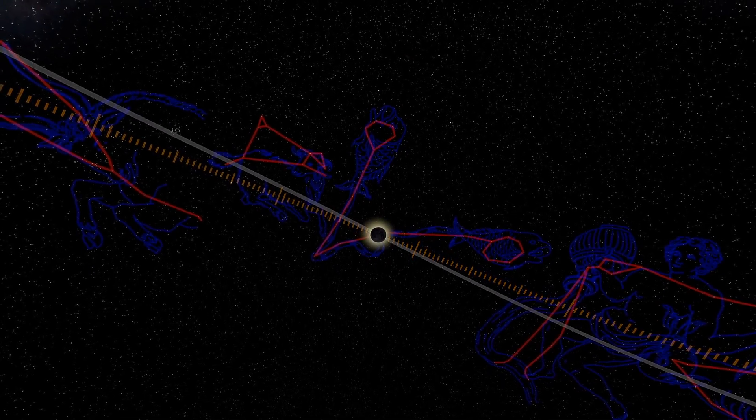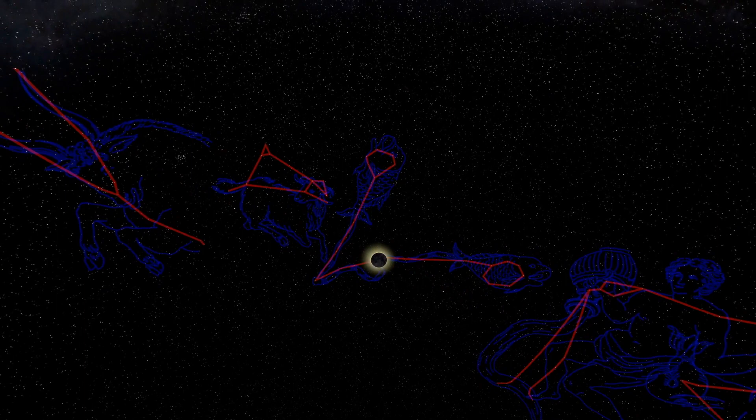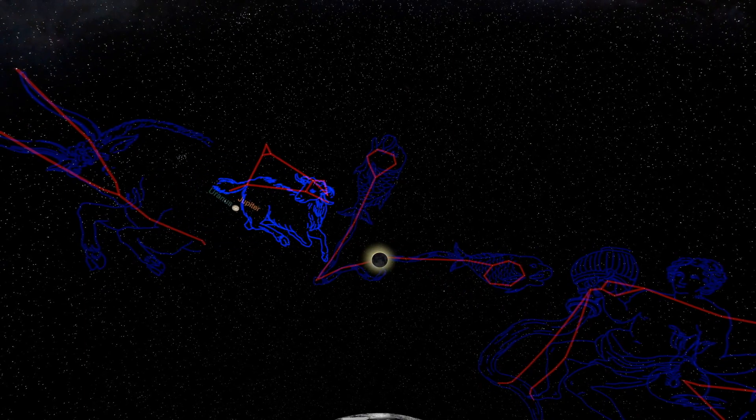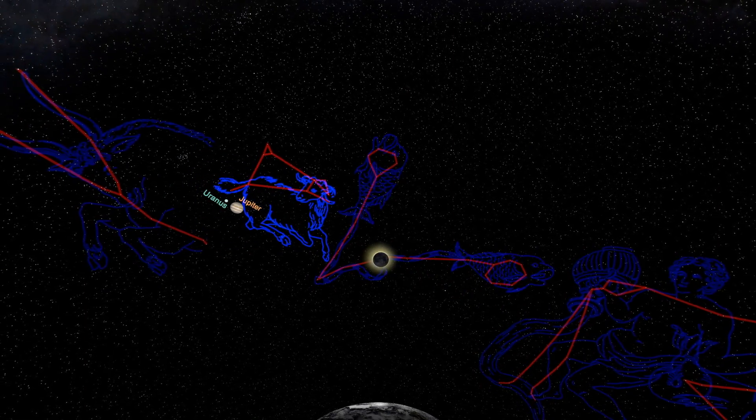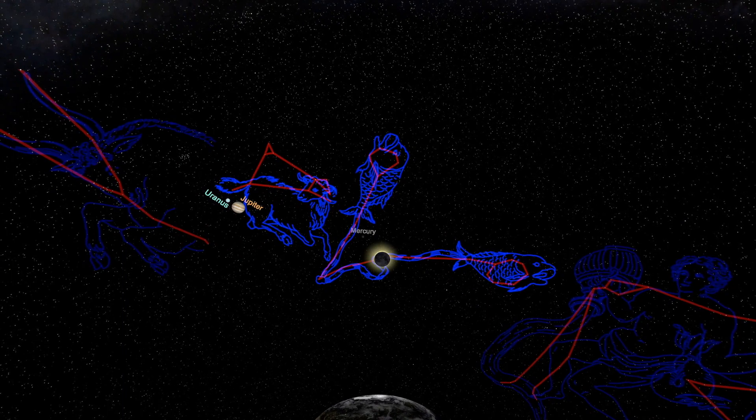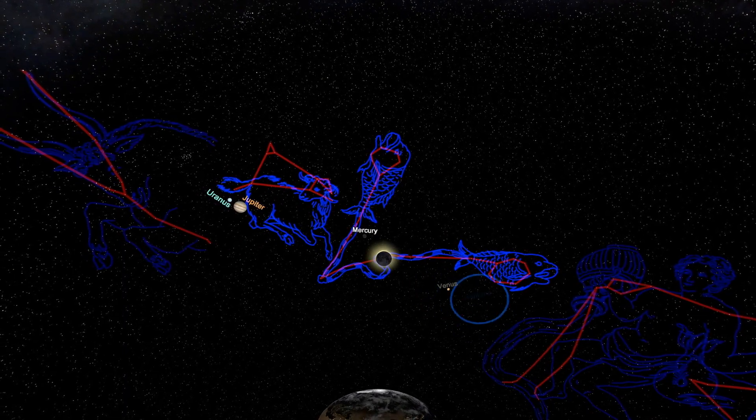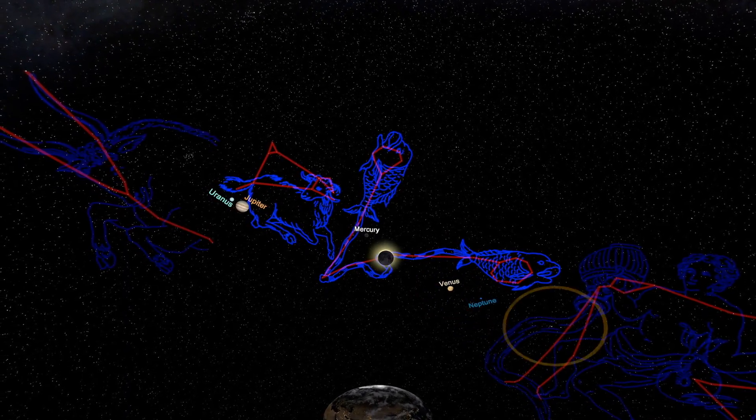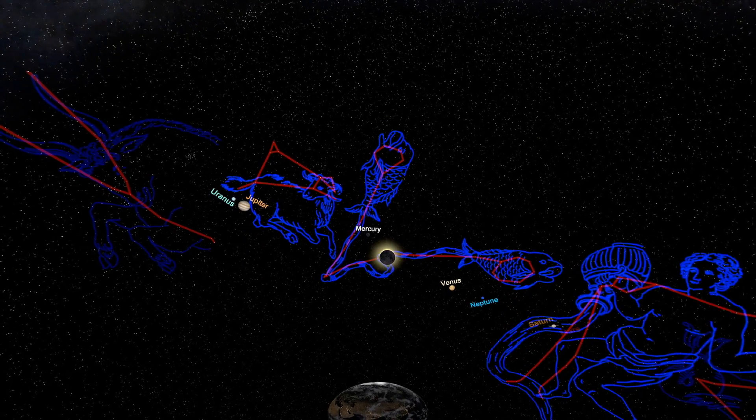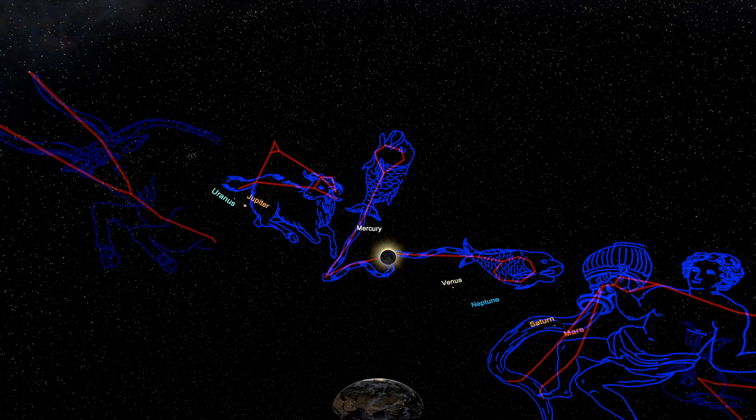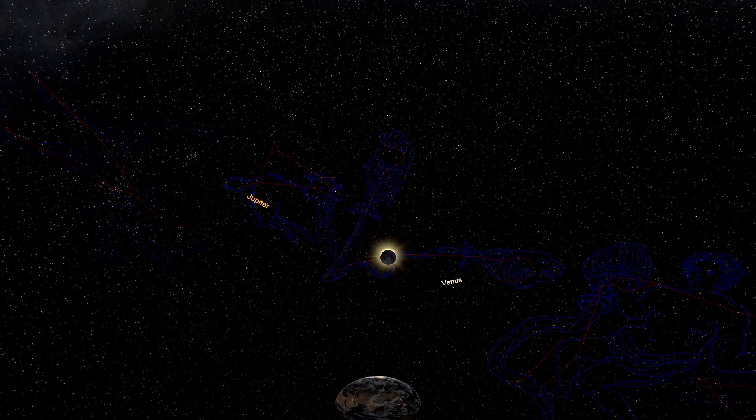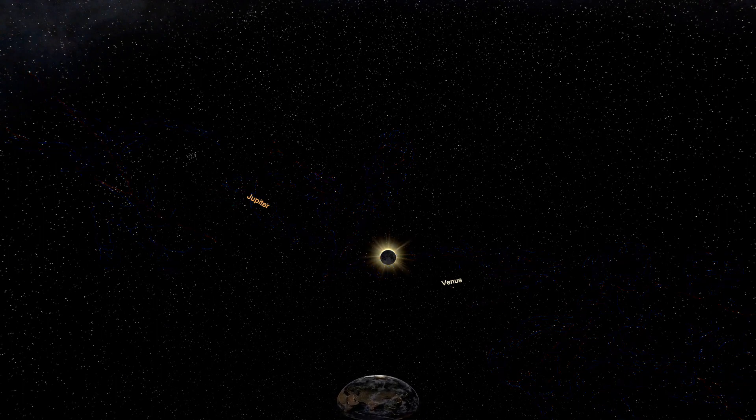From Earth we can see the other planets. Jupiter and Uranus are in Aries. Mercury lies close by in Pisces. Venus and Neptune are also in Pisces. Saturn and Mars lie beyond in Aquarius. The bright Jupiter and Venus will be easy to see during totality, when the moon covers the sun and the sky is dark.